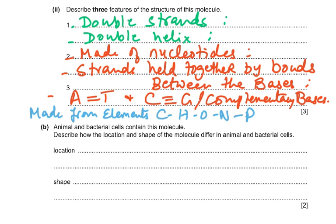Any three of these points would earn the marks: double strands, double helix, made up of nucleotides, strands held together by bonds between bases, complementary base pairing (A with T, C with G), A-T has two hydrogen bonds and C-G has three hydrogen bonds, and the elements are carbon, hydrogen, oxygen, nitrogen, and phosphorus.